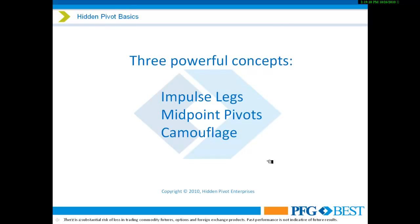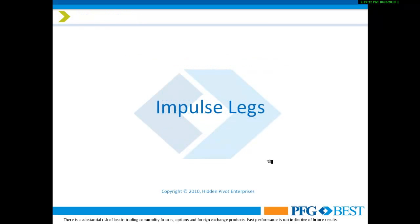We are going to look at just a few key concepts today, and I want you to come away from this session with at least one or two really good tricks that you can use to hit the ground running. The three ideas we're going to be examining today are: the impulse leg, midpoint pivots, and camouflage.